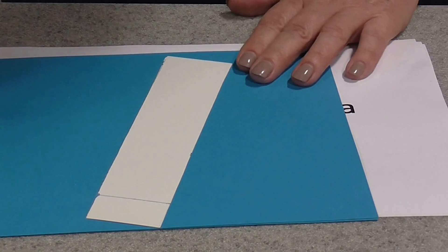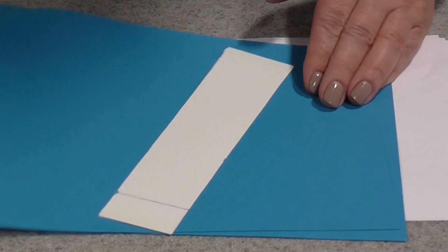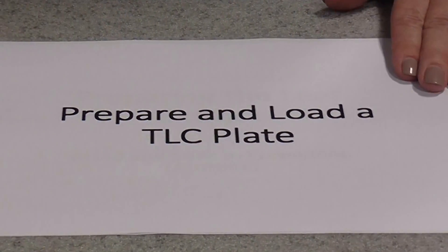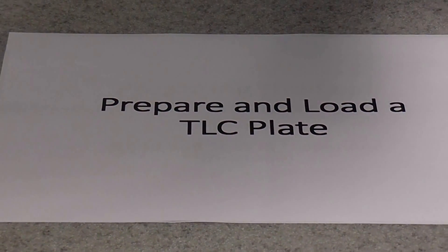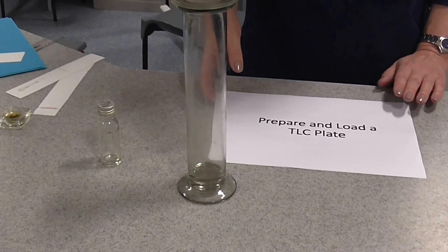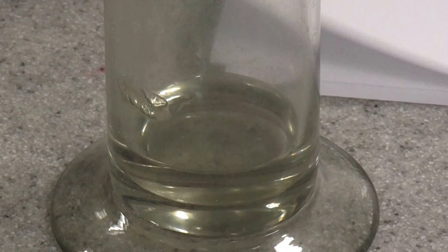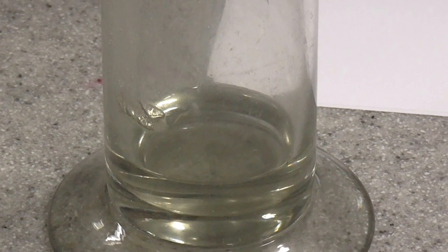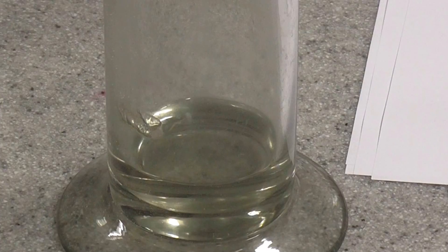While you're doing this, the next thing you could also do while you're waiting for your leaves to soak is actually put your solvent, which will be the mobile phase, into whatever vessel you're going to use for your chromatography. So I am using a gas jar here. Now, into the bottom of that gas jar, I've placed my solvent.